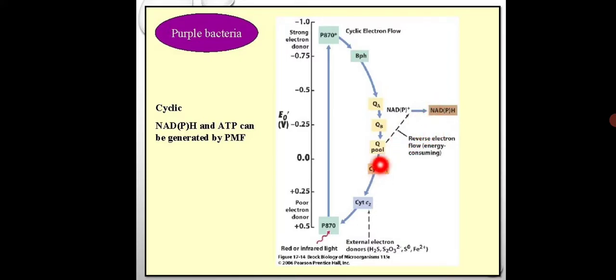The reverse electron flow is driven by the proton motive force — electrons are attracted back because of proton motive force generation. Proton motive force plays a very important role for generation of ATP and also drives electrons in reverse. This overall mechanism is based on reduction potential. The electron reverses back through the proton motive force to NAD+, which gets reduced to NADH, or NADP+ gets reduced to NADPH with addition of phosphate.